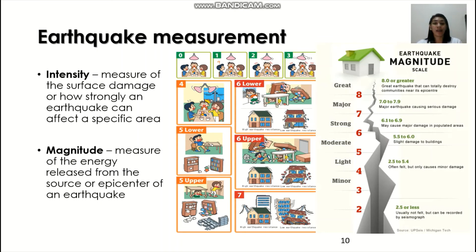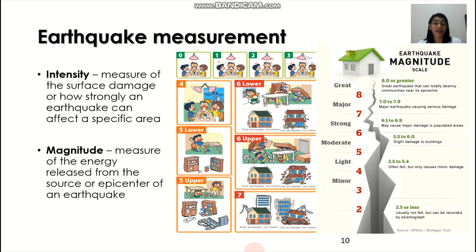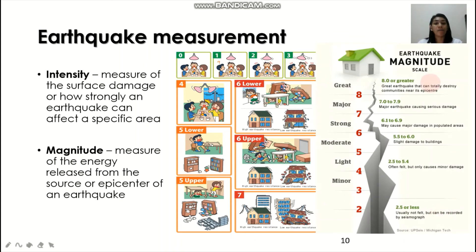At intensity four, it becomes more visible; and at intensities five and six you see major movements or major damages to your house. Intensities six and seven describe serious structural damages. For magnitude, it is the measure of energy released from the source or epicenter of an earthquake. Magnitude two to three are minor earthquakes usually not felt but can be recorded by a seismograph. A light earthquake ranges from about magnitude four to five — often felt but causing only minor damage.